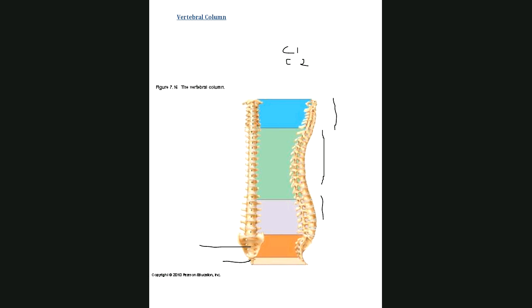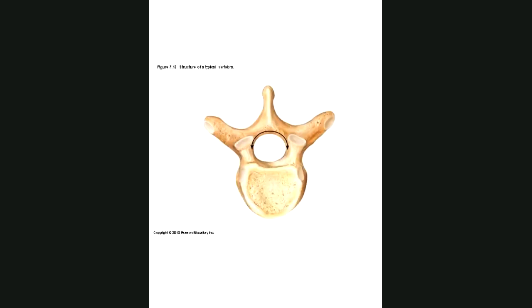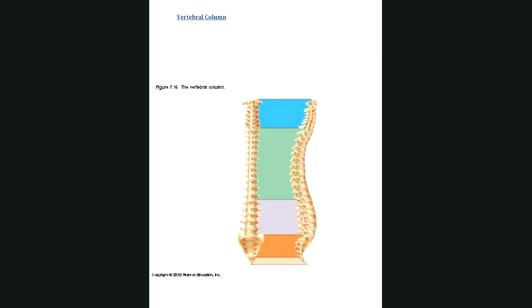We have our intervertebral discs padding each vertebrae, and a little tiny hole here between each of the vertebrae, and between the vertebrae, we call them intervertebral foramen. This is an individual vertebrae: body of the vertebrae, spinous process, transverse process, and vertebral foramen, as opposed to intervertebral foramen, which is between the individual vertebrae.